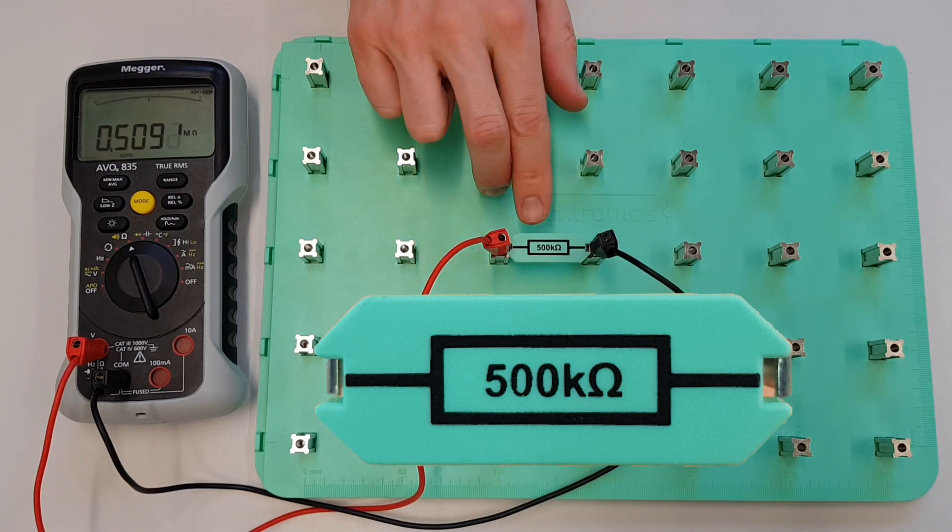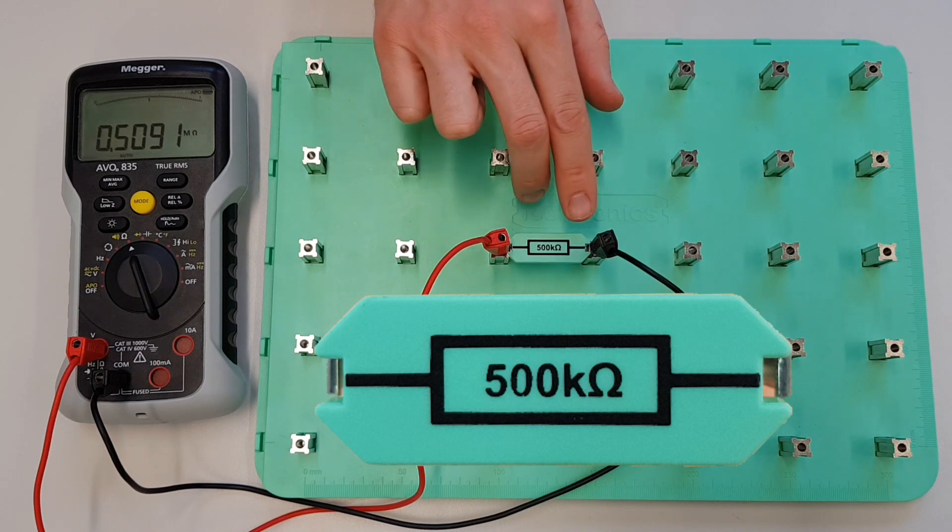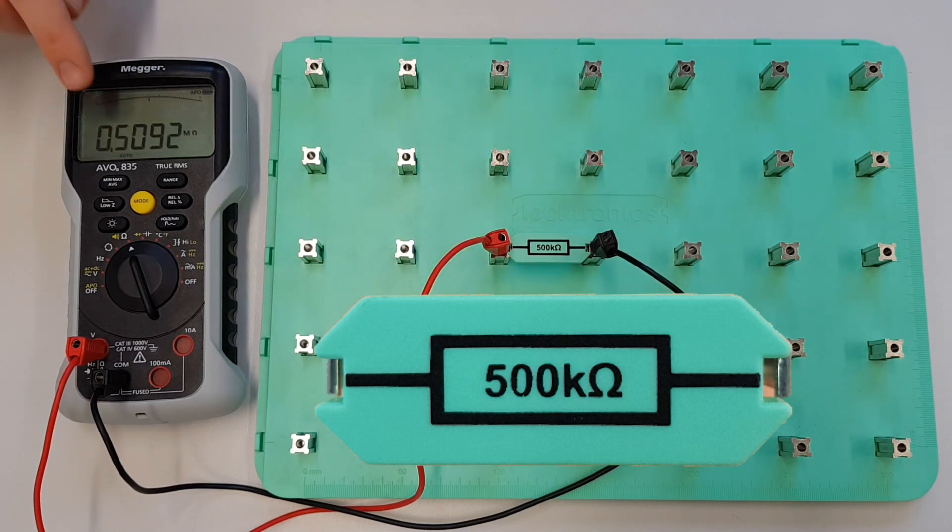And because here we've got 0.5 of a megohm, that is half a million ohms. We can see that that is actually 500,000 ohms as well.